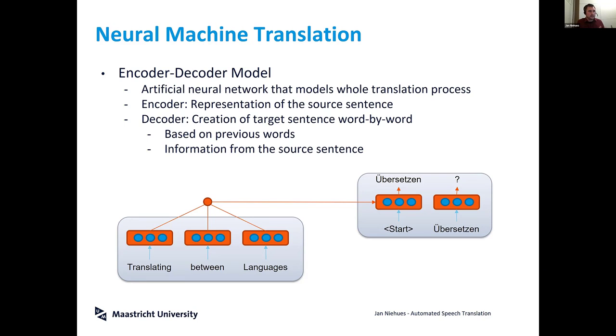The system always looks back at the encoder output and sees what is still missing — what it needs to translate to have a complete translation of the source.